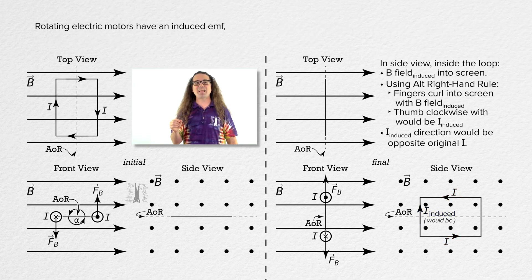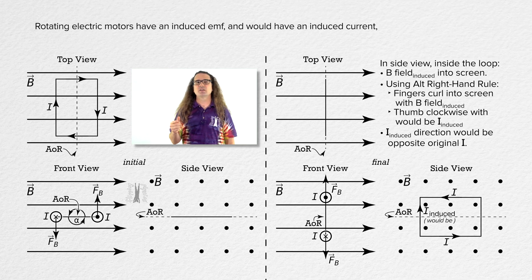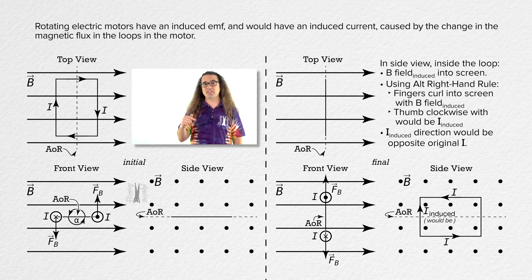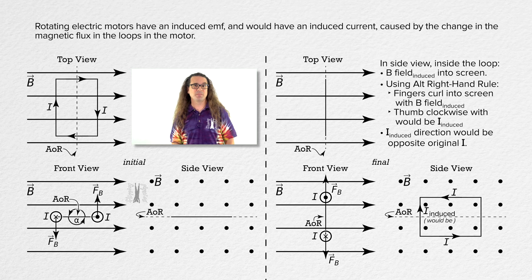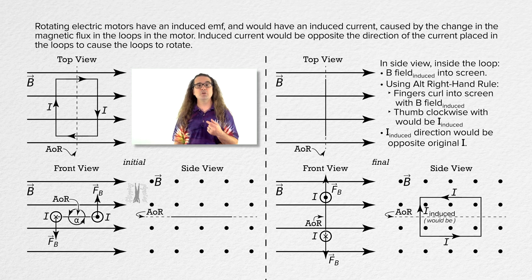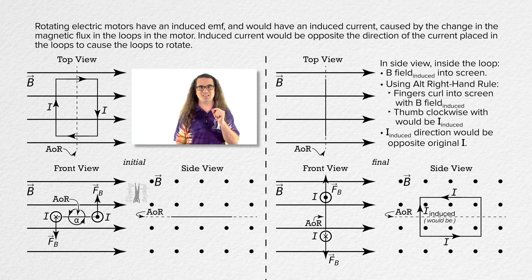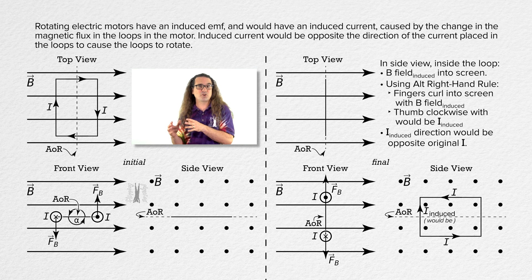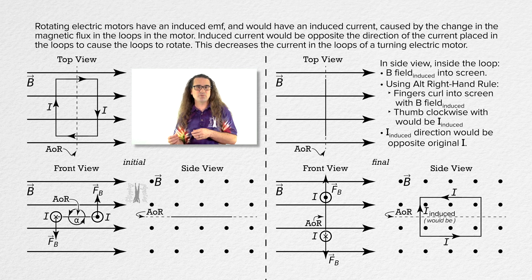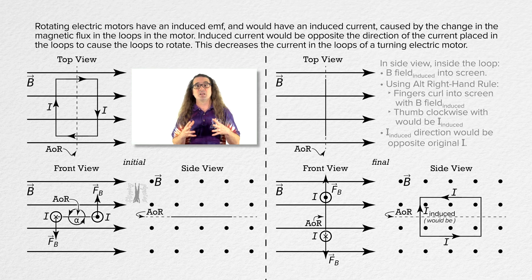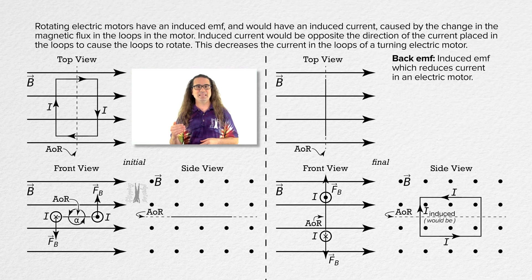In electric motors, there is an induced EMF and there would be an induced current caused by the change in the magnetic flux in the loops of the motor. And that induced current would be opposite the direction of the current placed in the loops to cause the loops to rotate in the first place. Because this induced current would be opposite in direction from the current placed in the loops to cause the motor to turn in the first place, this decreases the current in the loops of a turning electric motor. This concept is called back EMF.